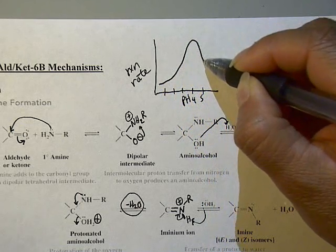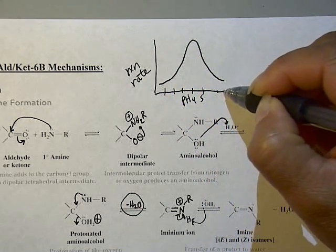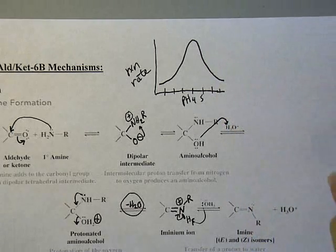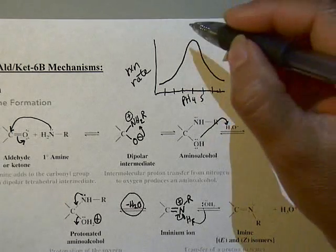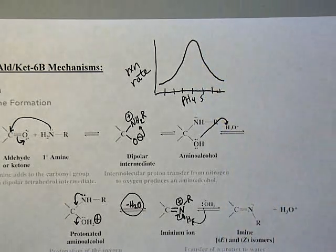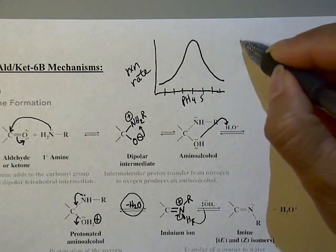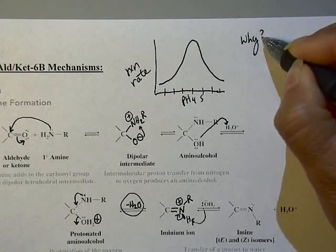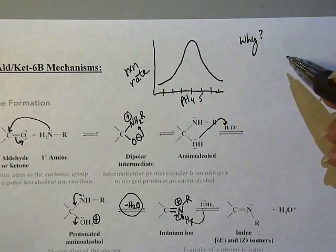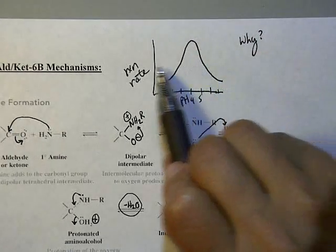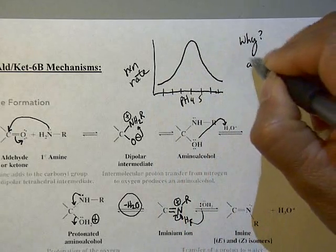If you look at the reaction rate versus the pH, between 4 and 5 the reaction rate is highest, and then it goes down again as the pH increases. So the optimum pH is between 4 and 5, and the question is why is the rate highest at this pH?